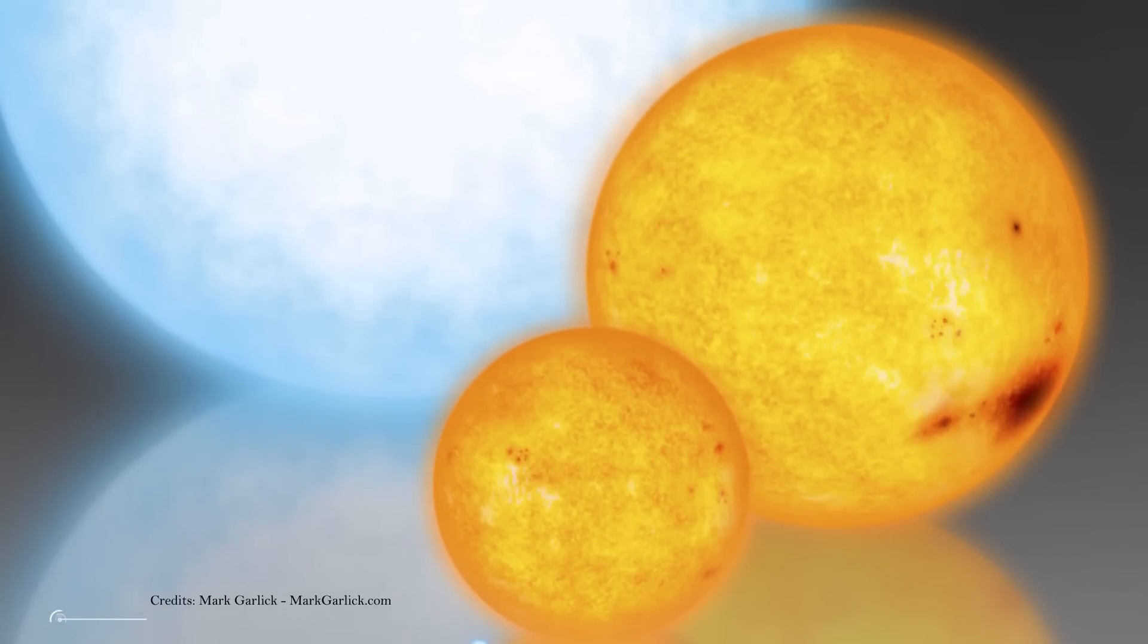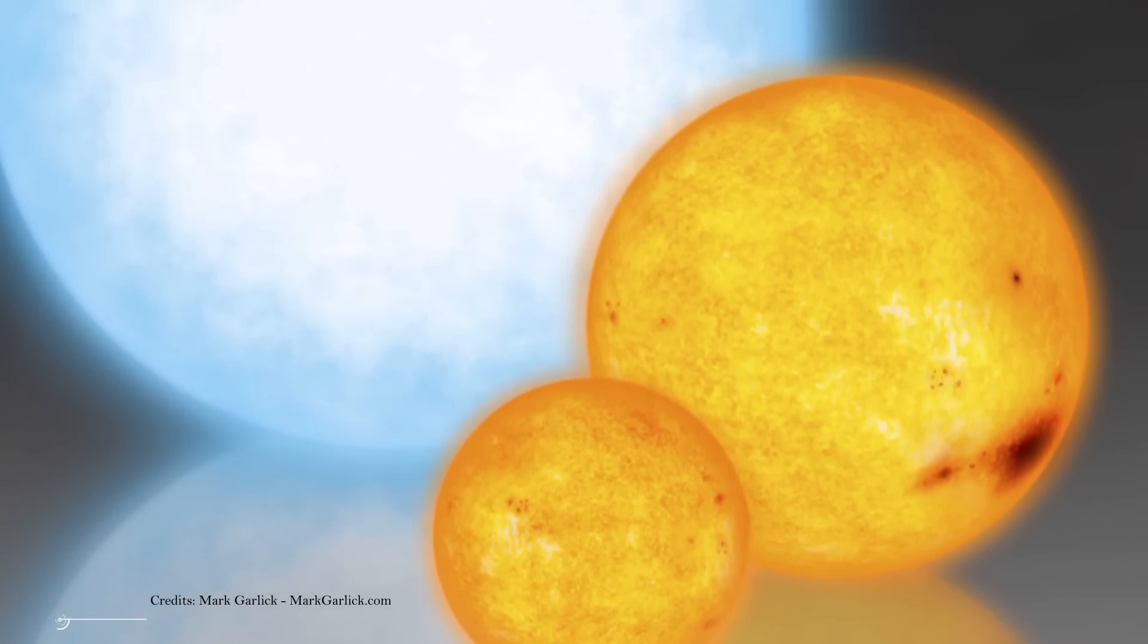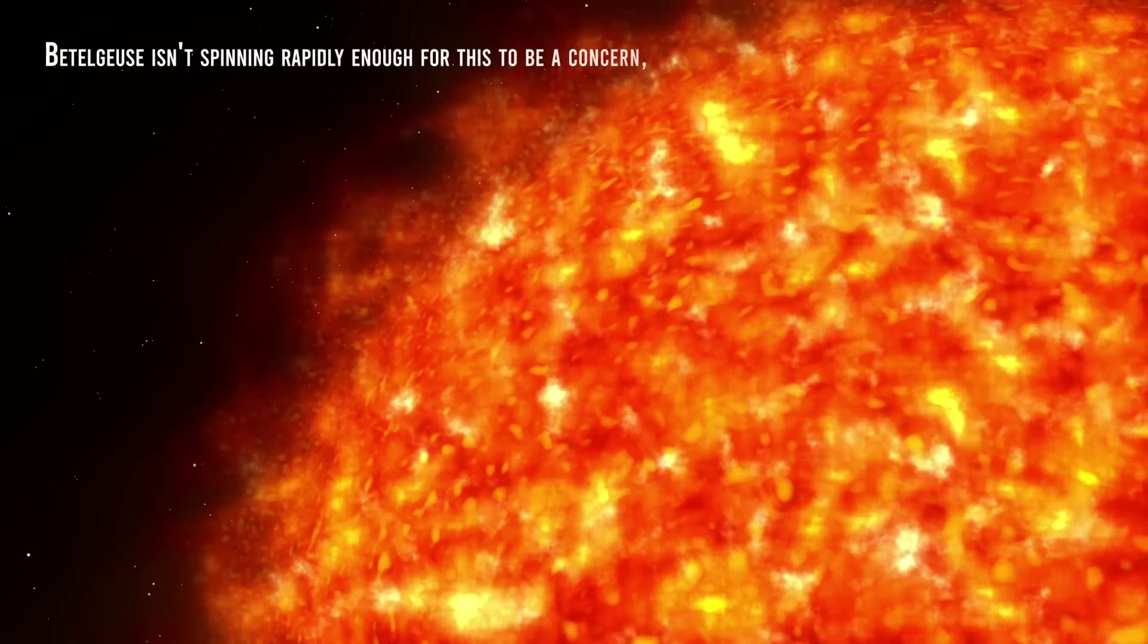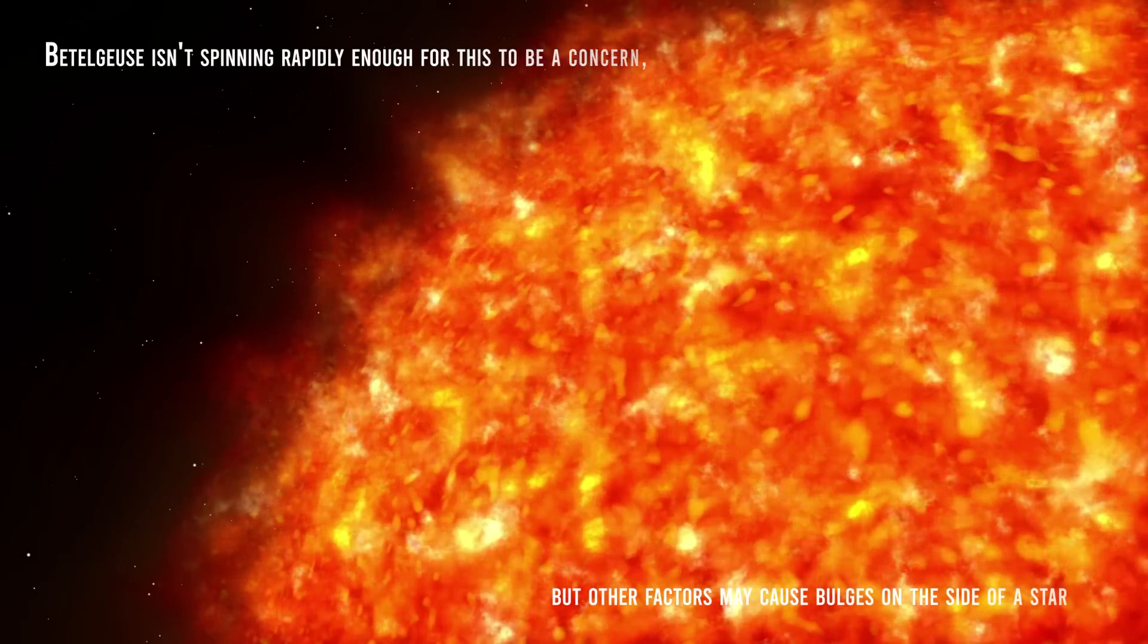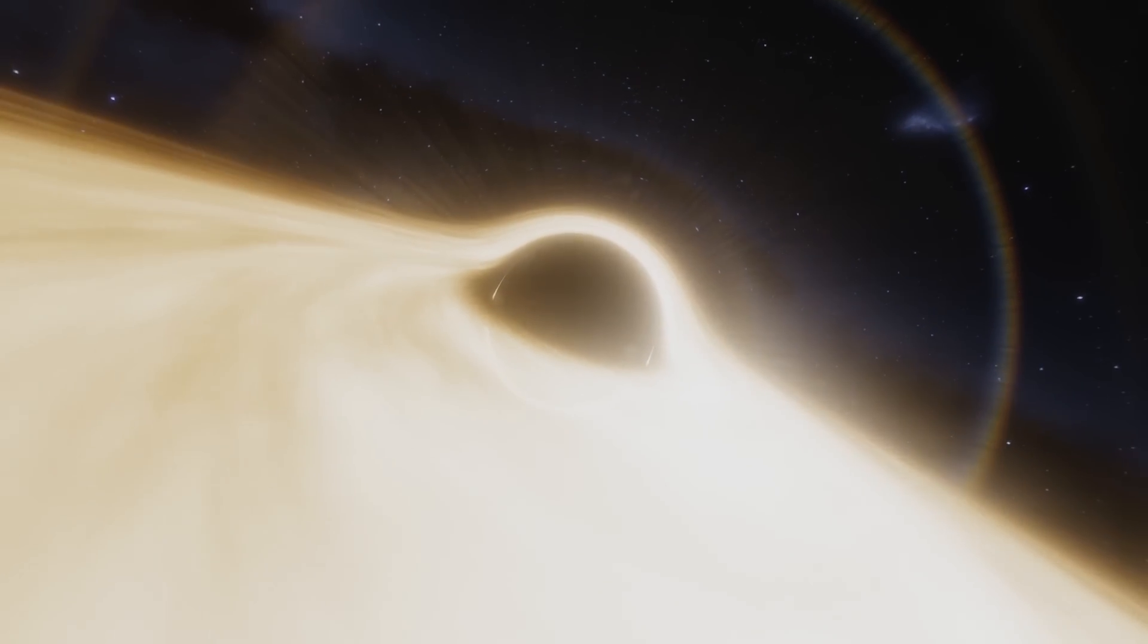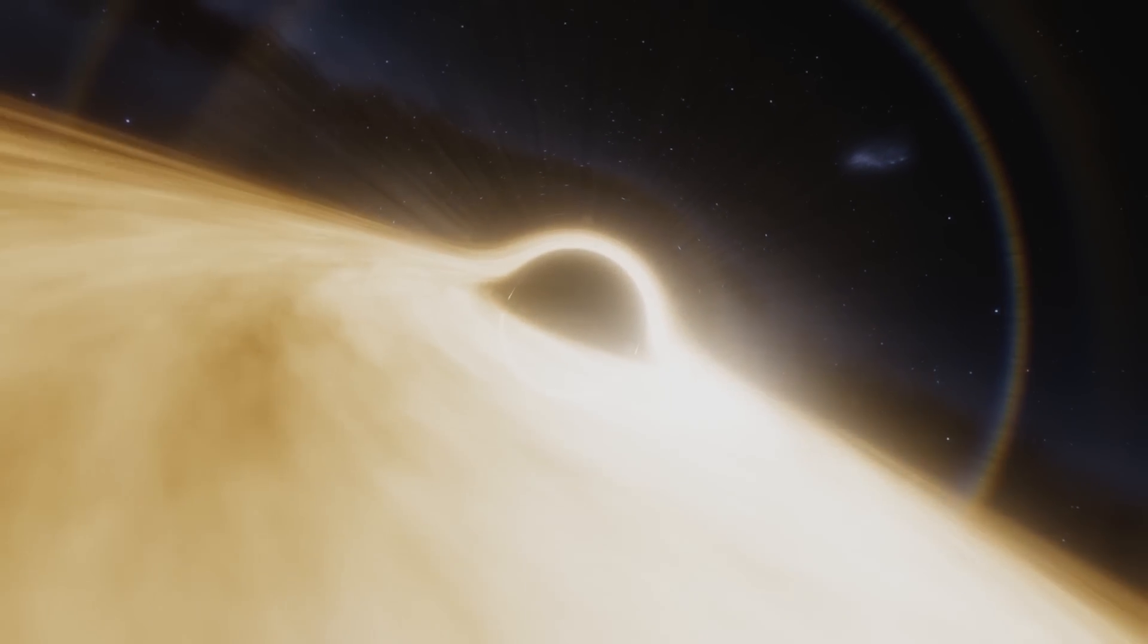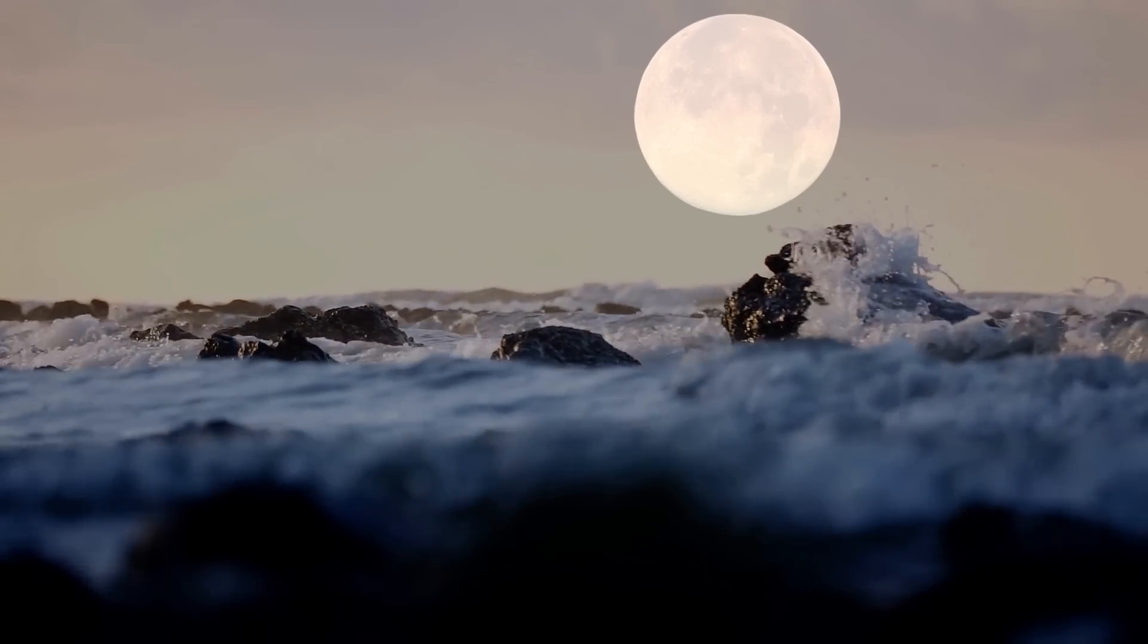Because of this gravity darkening, certain stars look brighter near their poles than in their centers. Betelgeuse isn't spinning rapidly enough for this to be a concern, but other factors may cause bulges on the side of a star. If a chance visitor, such as a tiny black hole swung too near to the star, it might generate tides on the surface in the same manner as the moon does on Earth. With the tidal bulge in place, the equator would darken, as would the star's overall appearance.